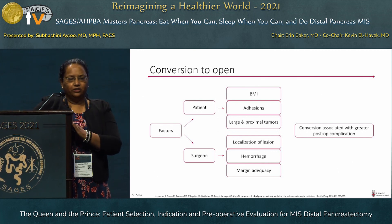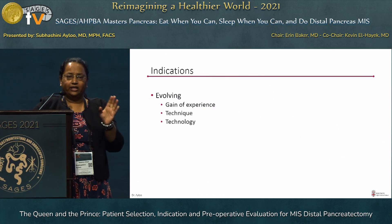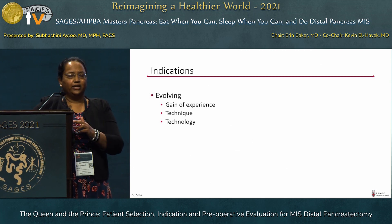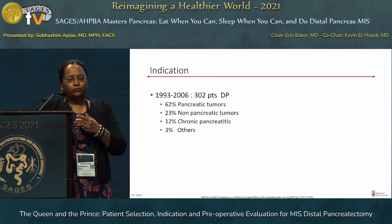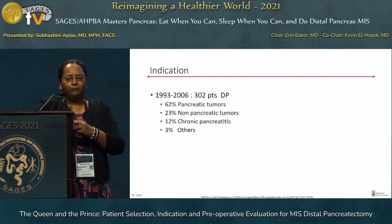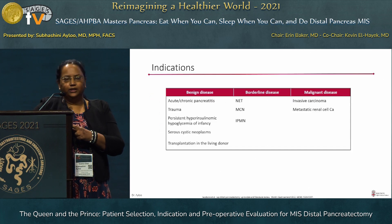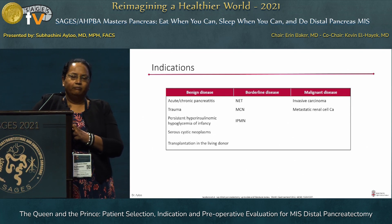What are the indications for MIS distal pancreatectomy? Previously the thinking was that MIS was good for benign lesions, but that concept has changed and continues to evolve with gained experience, technique, and technology. One study looking at 300 consecutive patients found that the top two reasons for MIS-DP were pancreatic tumors, which remain the leading indication. These can be categorized into benign, borderline, and malignant diseases.